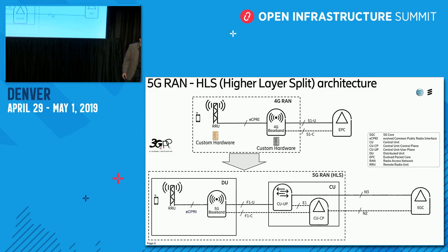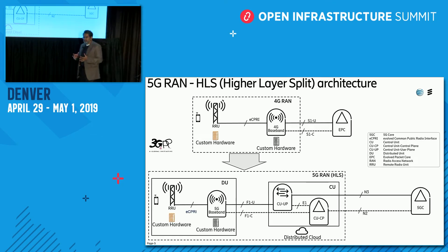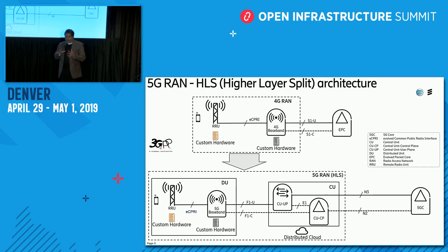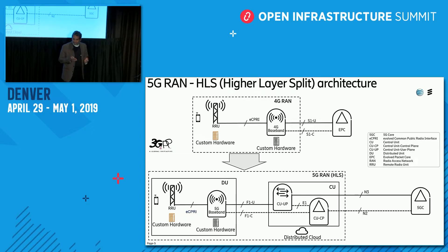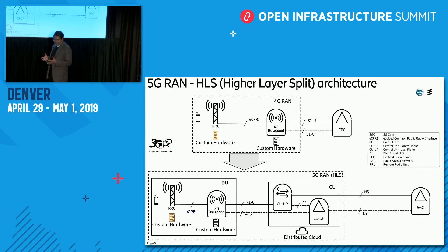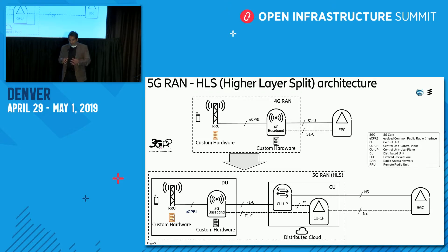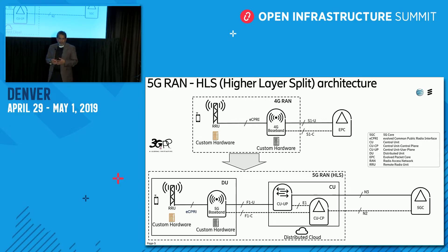In today's architecture, the hardware is usually customized because of the latency and processing requirements of the RAN. Moving forward, in the central unit there are two components: the central unit user plane (CUUP), through which user plane traffic runs, and the central unit control plane (CUCP), which handles call setup and session setup. These are the key components moved out of the baseband unit that can now be deployed in a distributed cloud such as OpenStack or Kubernetes.